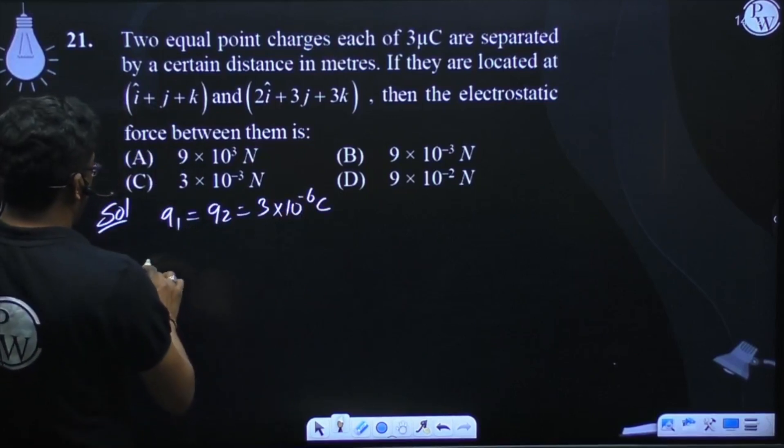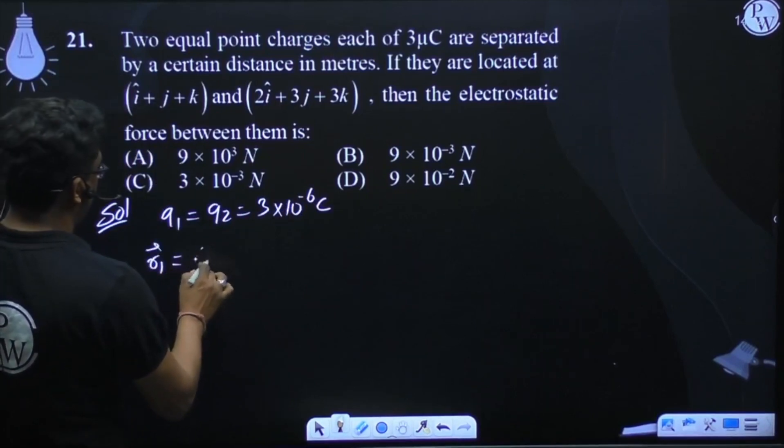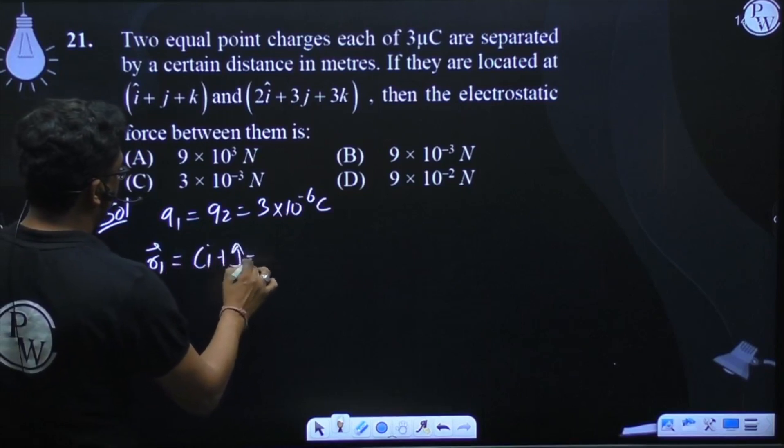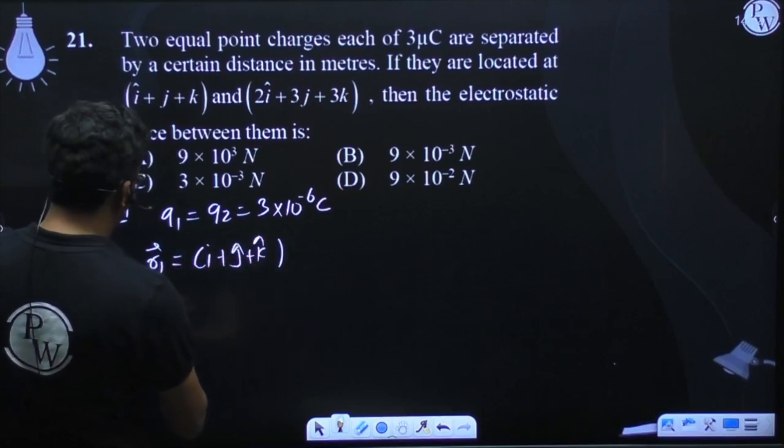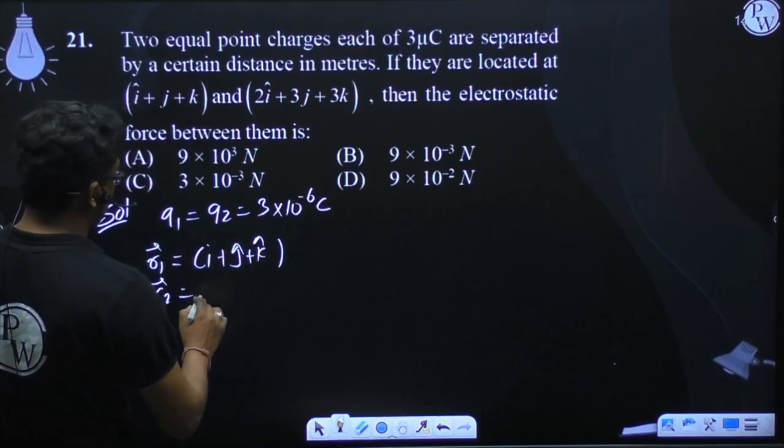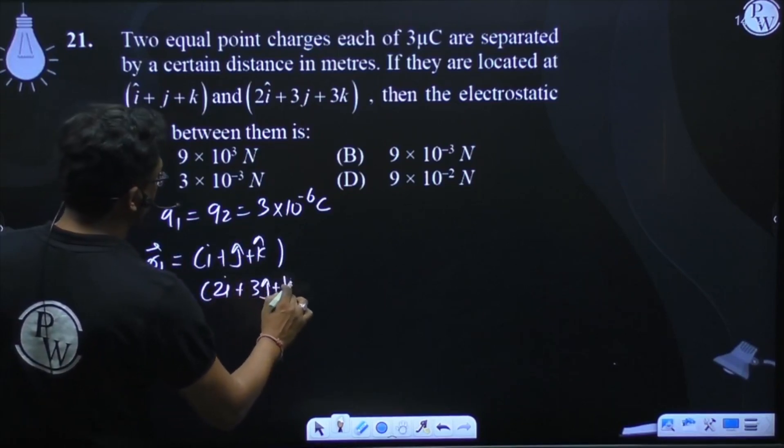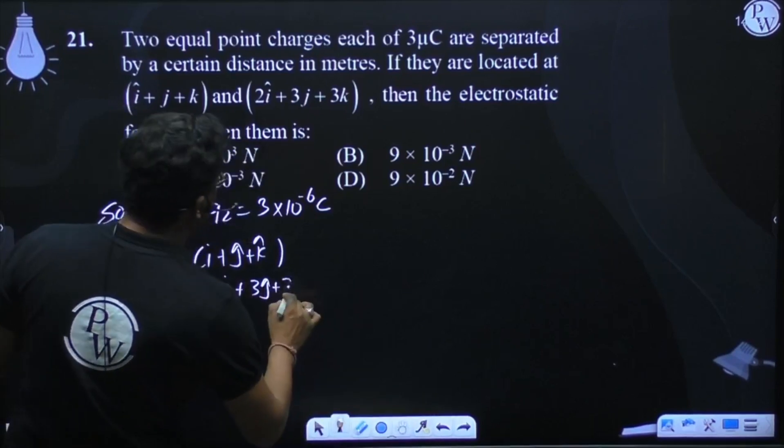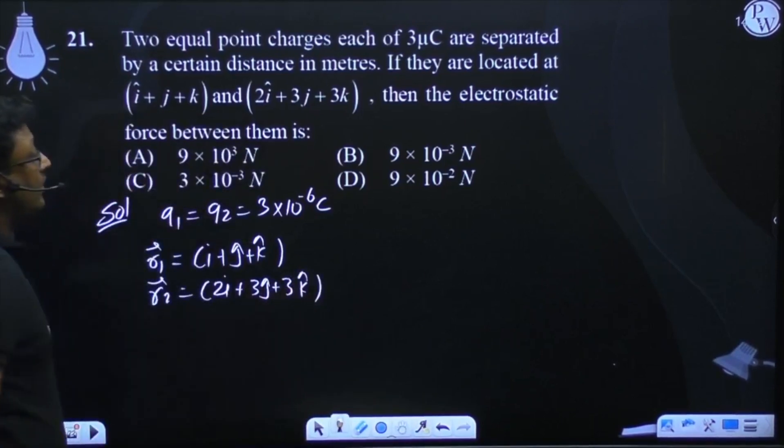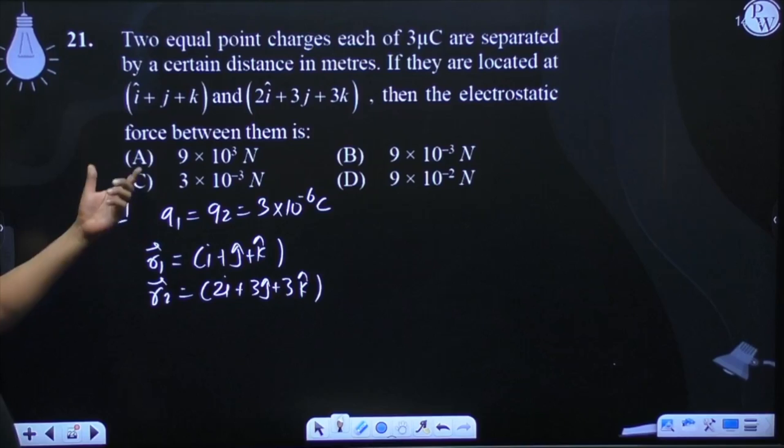r1 vector is given as i plus j cap plus k cap and r2 vector is given as 2i plus 3j cap plus 3k cap. We need to find the electrostatic force between them.